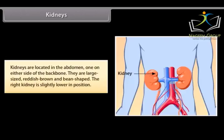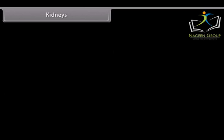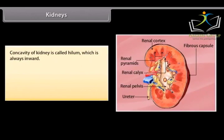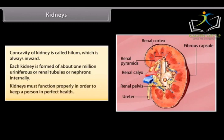Kidneys are located in the abdomen, one on either side of the backbone. They are large-sized, reddish-brown, and bean-shaped. The right kidney is slightly lower in position. The concavity of the kidney is called the hilum, which is always inward. Each kidney is formed of about one million uriniferous or renal tubules, called nephrons, internally. Kidneys must function properly in order to keep a person in perfect health.